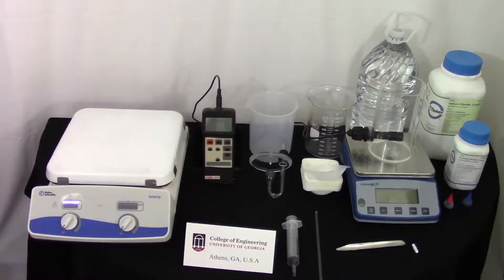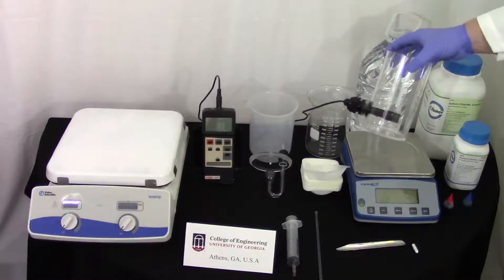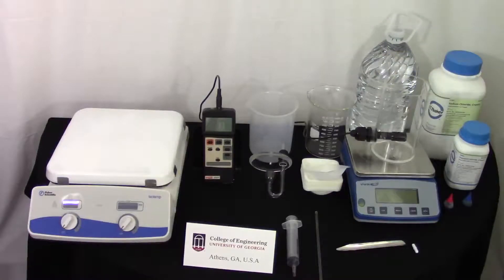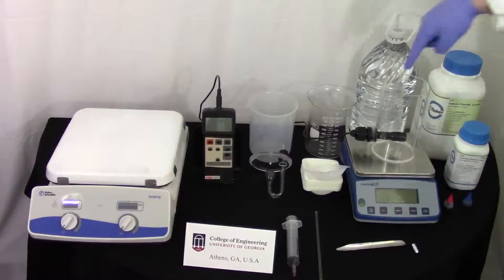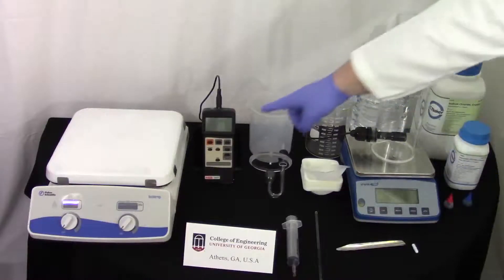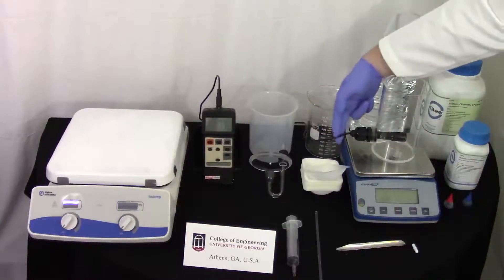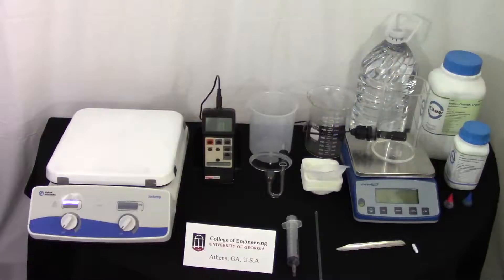In order to set up for an experimental run, the following materials are needed: diffusion cell experimental equipment, namely the vessel for the distilled or deionized water, the diffusion cell, the conductivity probe and meter with attached cord, a stir bar, and stir plate.